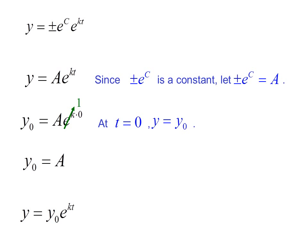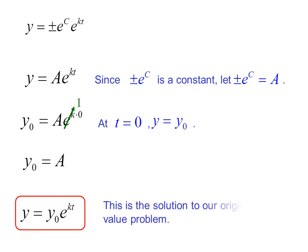So y equals y sub 0 e to the kt. This is the solution to our original initial value problem.